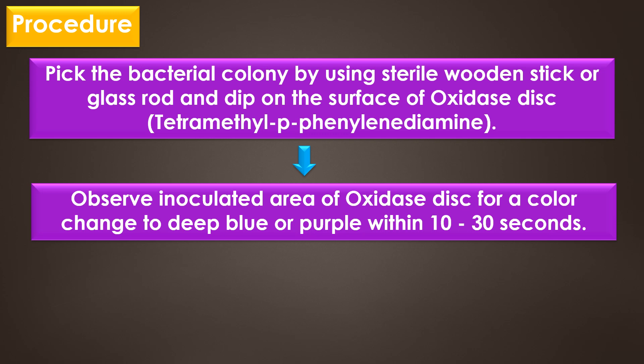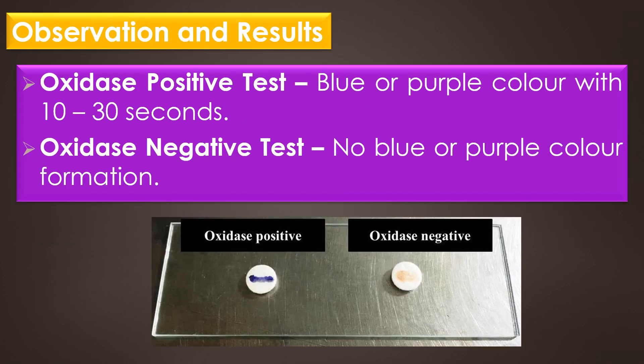Finally, observe the inoculated area of the oxidase disc for a color change to deep blue or purple within 10 to 30 seconds. An oxidase negative test shows no blue or purple color formation.